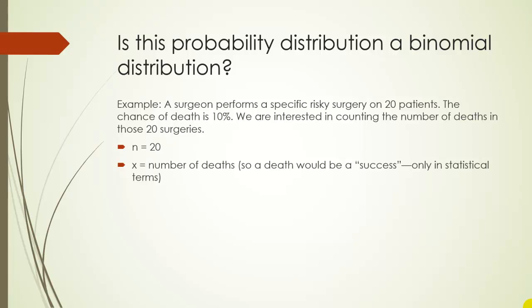So no value judgments here. So a success would be a death and a failure would be the patient surviving. Again, only in statistical terms. The probability of a death is 10% or 0.1 and then the probability of failure would then be 90% or 0.9. So since we're able to identify all those things, it is a binomial distribution.